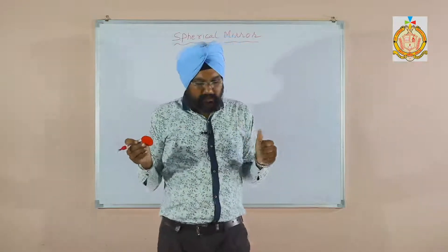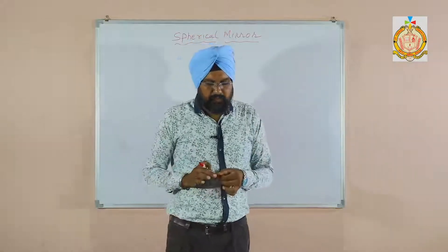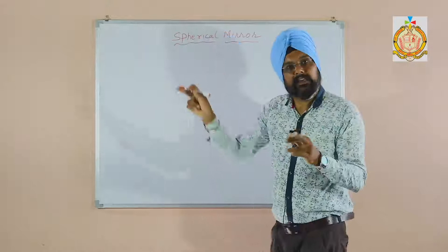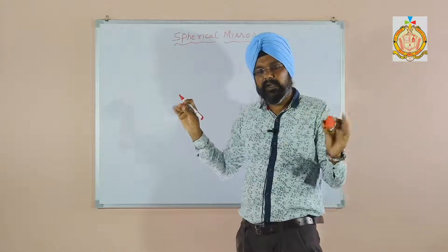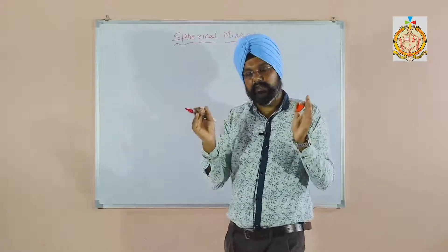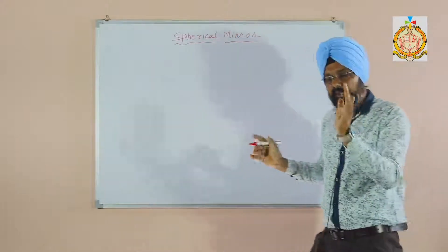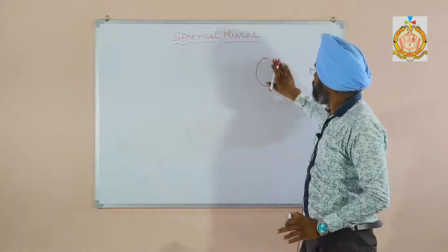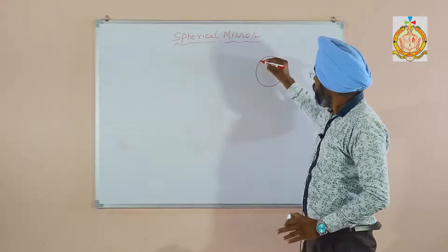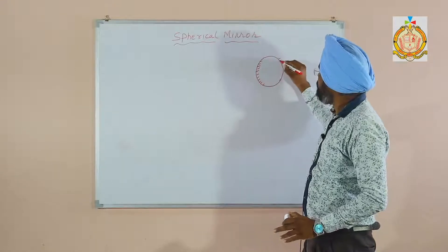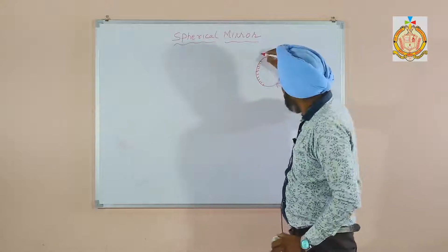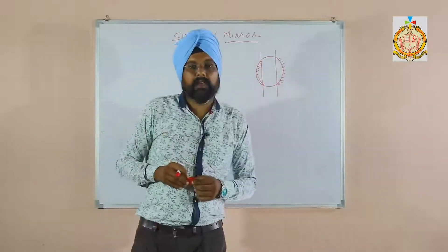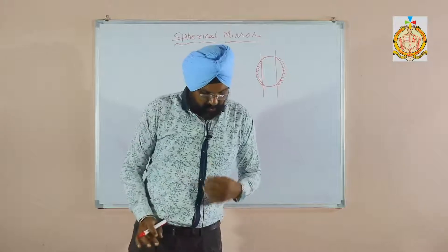The next topic we are going to explain is the spherical mirror. First of all, what is a spherical mirror? A reflecting surface which is a part of a sphere — sphere means a circle. This mirror is a part of a sphere: one is silvered from inside and one is silvered from outside. So a reflecting surface which is a part of a sphere is called a spherical mirror.